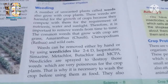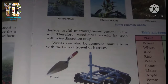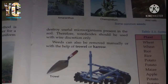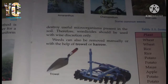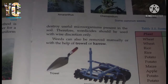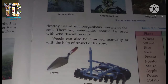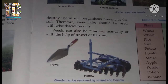Weedicides are sprayed to destroy those weeds which are very poisonous for the crop plants. That is why it is necessary to wash the crops before using them as food. Weedicides also destroy useful microorganisms present in the soil — for example, earthworm. Therefore, weedicides should be used with wise discretion, only when very necessary. Otherwise, use your hands to remove the weeds.